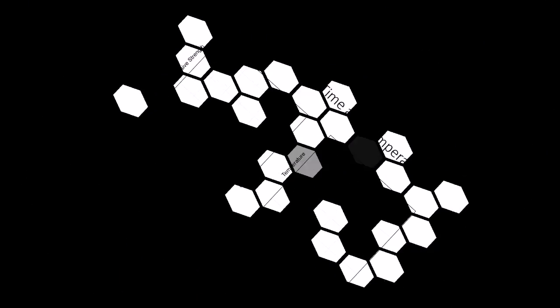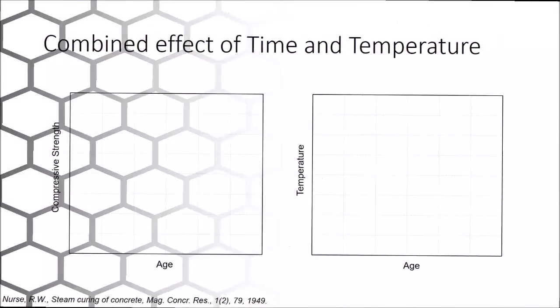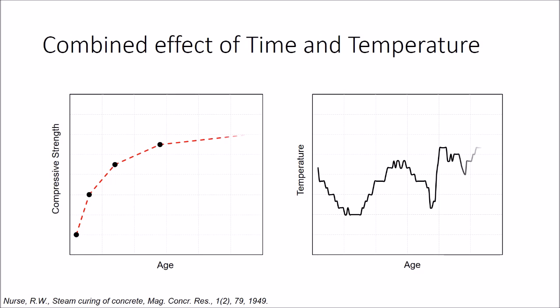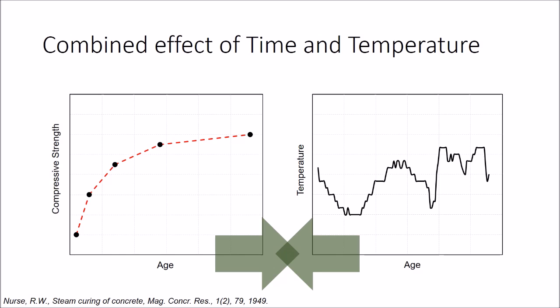One can expect that the age of concrete has a significant effect on strength. On the other hand, the temperature history during the curing process can affect the strength growth. Another key figure often considered in studying strength growth is what's called datum temperature — the lowest temperature at which strength growth is observed.